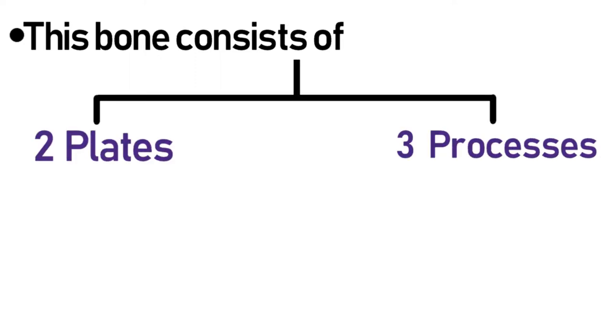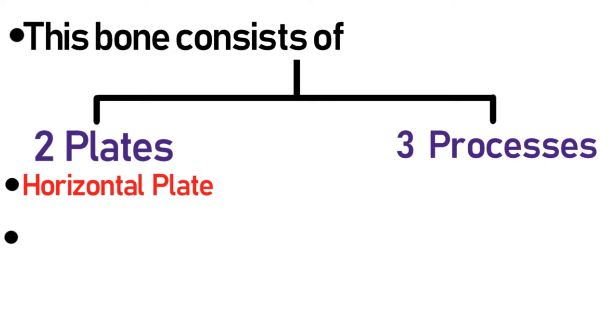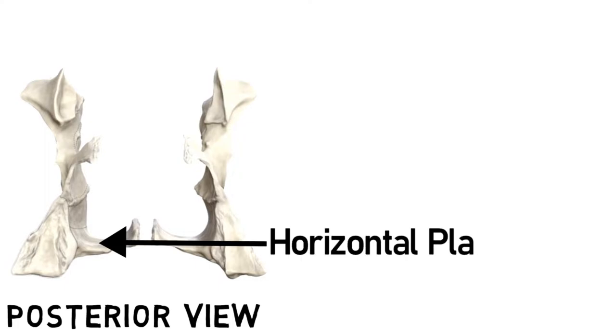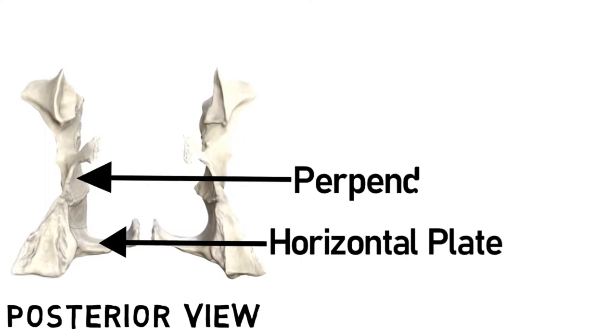The plates include the horizontal and the perpendicular plate. This is the posterior view of the bone. This plate which you can see is the horizontal plate. This is the perpendicular plate, and as you can see, they unite at a right angle with each other.